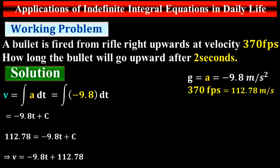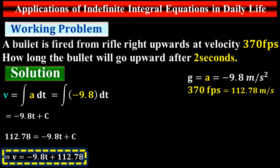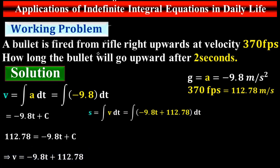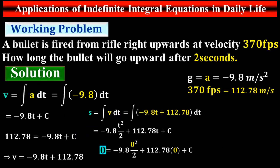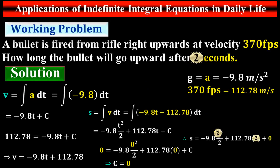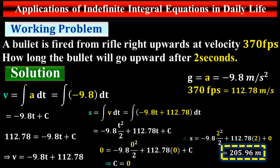Substituting C = 112.78, the velocity equation is v = −9.8t + 112.78. For displacement, s equals the integral of velocity: integrating gives s = −9.8t²/2 + 112.78t + C. Initially displacement is 0 at t = 0, so C = 0. Substituting t = 2 gives a displacement of 205.96 meters — this is the displacement of the bullet after 2 seconds.